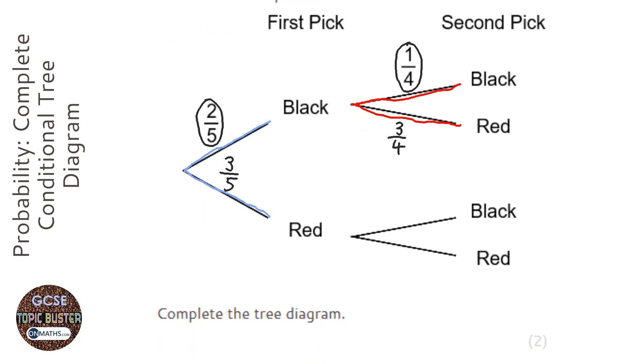But looking at the bottom one, looking at the fact that we've picked a red now, that means if we started off with two black and three red, it means we only have two reds left.